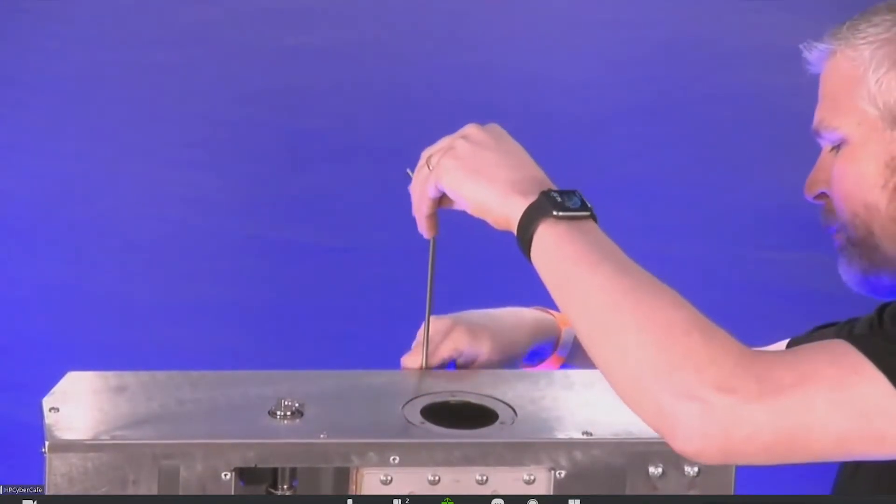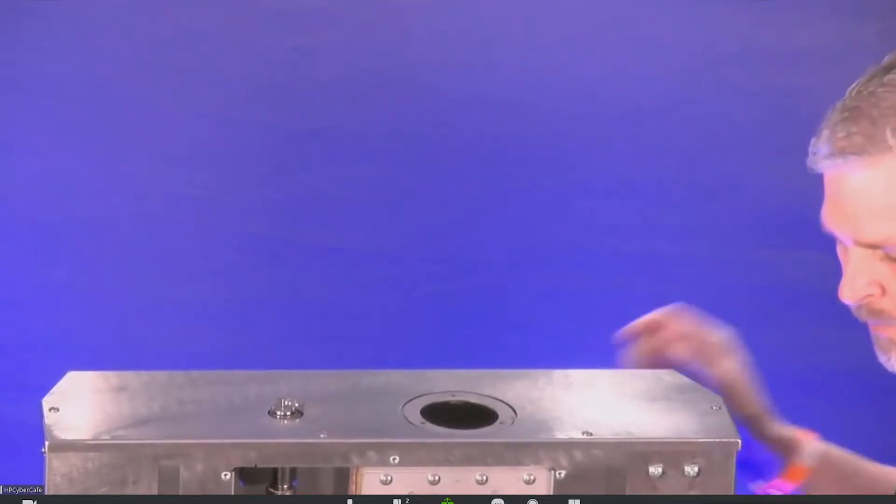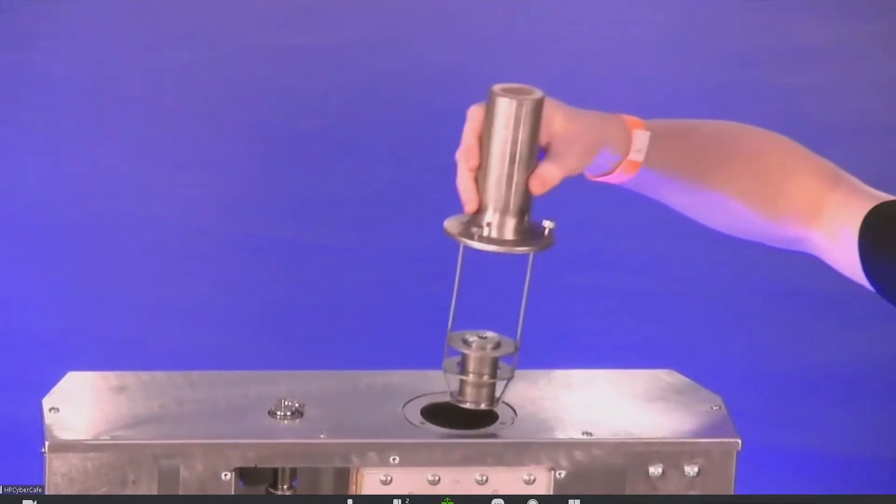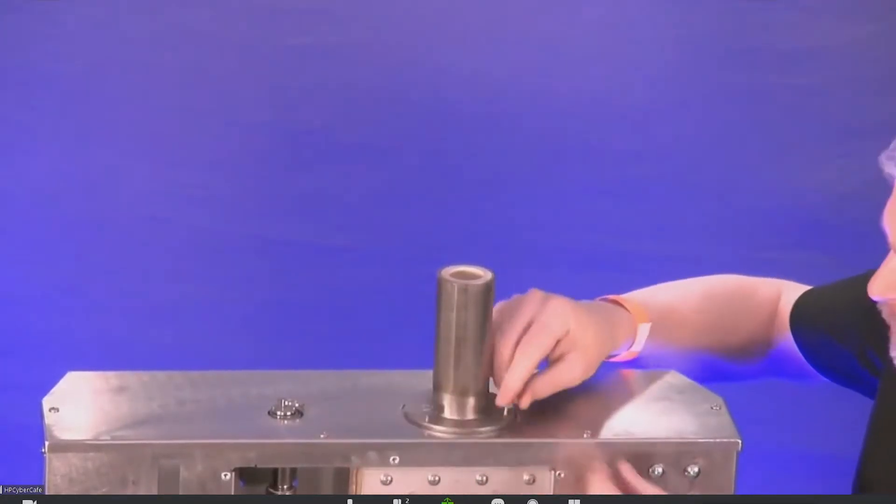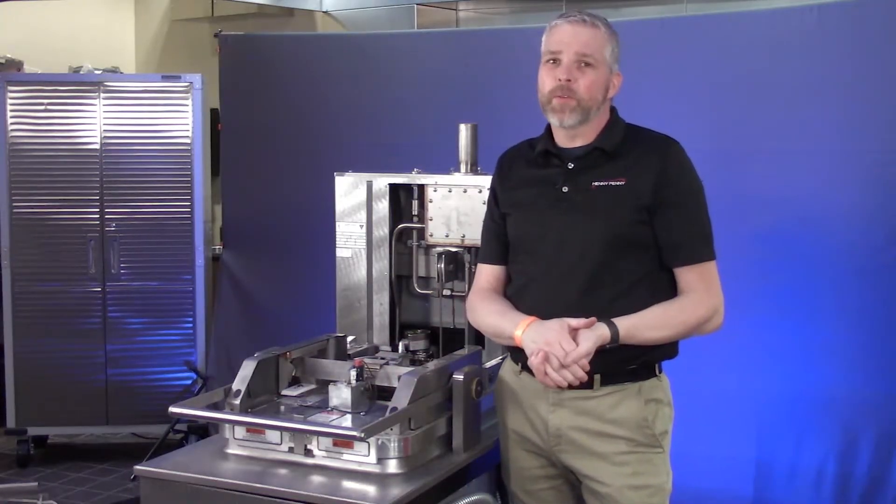This rod stores right in the back of the fryer in two clips. They put their clean deadweight assembly back in and then can screw these three thumb screws back down. So that's what we can try over the phone.